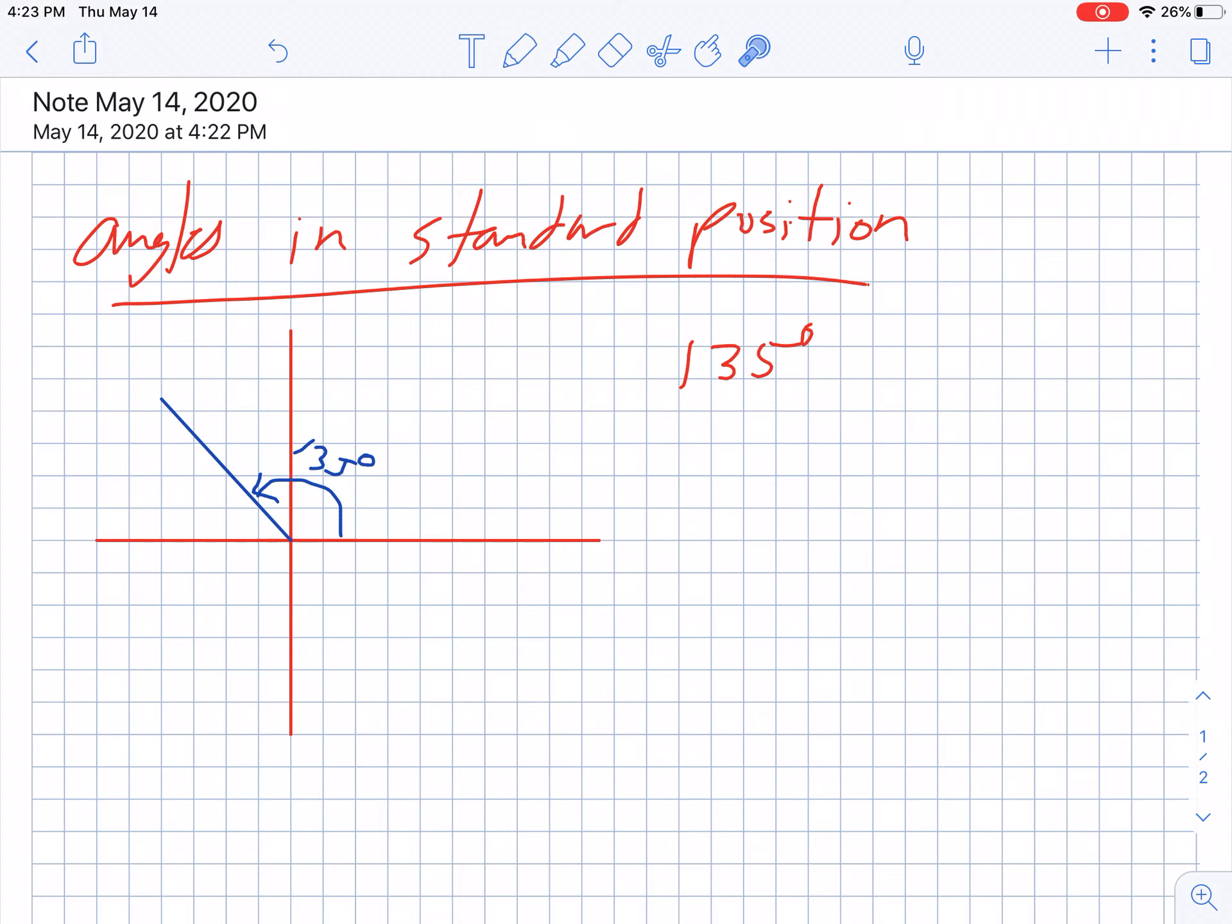What's important is directionality matters. So for example, if I wanted to graph negative 90 degrees, that's going to start here and it's going to end at the negative y-axis.